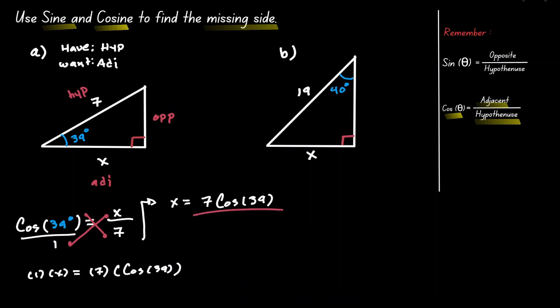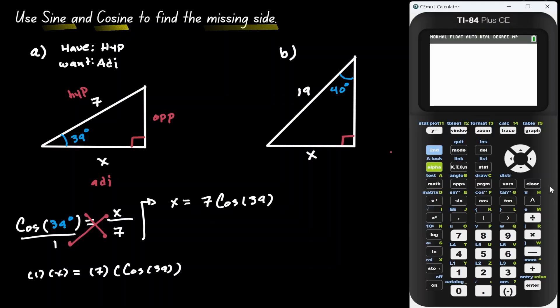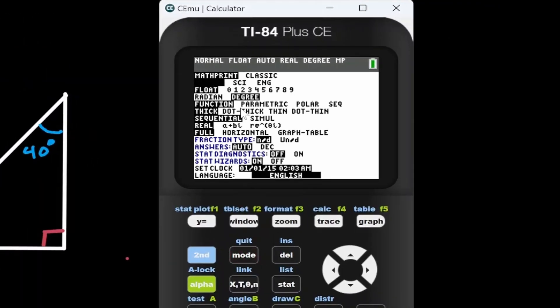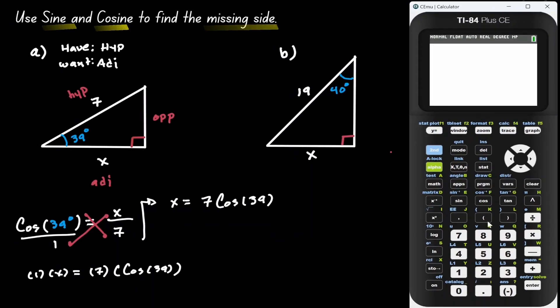Now let's use our calculator to find the value of this expression. Let's start by checking that our calculator is in degree mode. Let's press mode. Now that it's in degree, we can continue. Let's press second quit. And now let's put 7 times cosine — we can find it here. Let's press cosine and 39 inside the parenthesis. So now we have a result: 5.44.